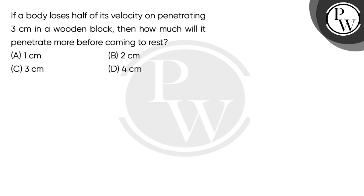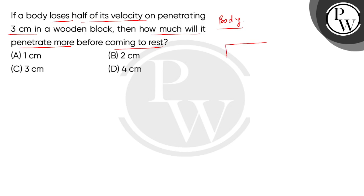Let's read the question: If a body loses half of its velocity on penetrating 3 cm in a wooden block, then how much will it penetrate more before coming to rest? So, given we have such a body penetrating a wooden block. When this body enters the wooden block, we consider the initial speed as V. A particular distance of 3 cm is covered, after which the speed is half, meaning V/2.